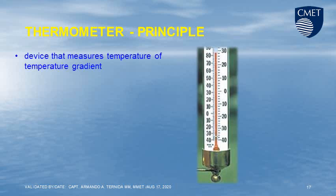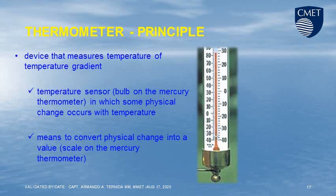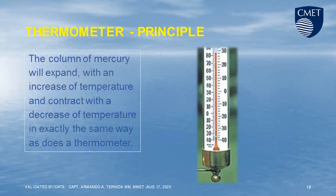Thermometer. A device that measures temperature or temperature gradient. The temperature sensor bulb on the mercury thermometer undergoes a physical change with temperature, which is converted into a value on a scale. The column of mercury will expand with an increase of temperature and contract with a decrease of temperature, in exactly the same way as does a thermometer.